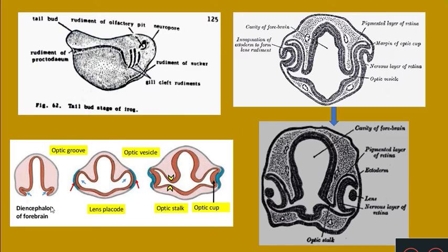We will start with how eye development occurs. In a simplified diagram, you can see this is the cavity of the forebrain and this is the cavity of the diencephalon. From the wall of the diencephalon, a pair of evaginations originate — these are the two evaginations that originate towards the sides; they are ventrolateral evaginations originating from the ventral wall of the diencephalon.